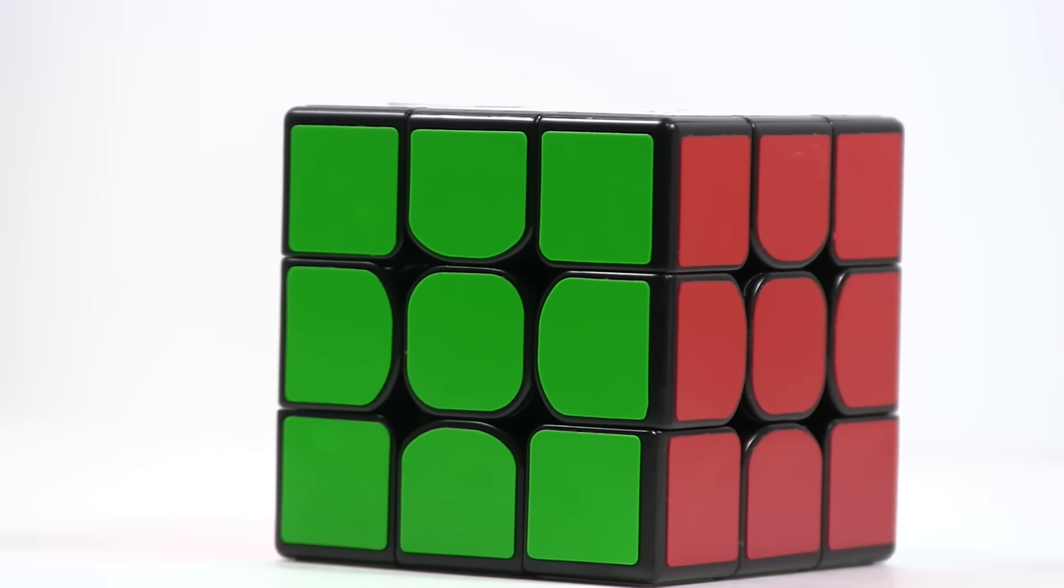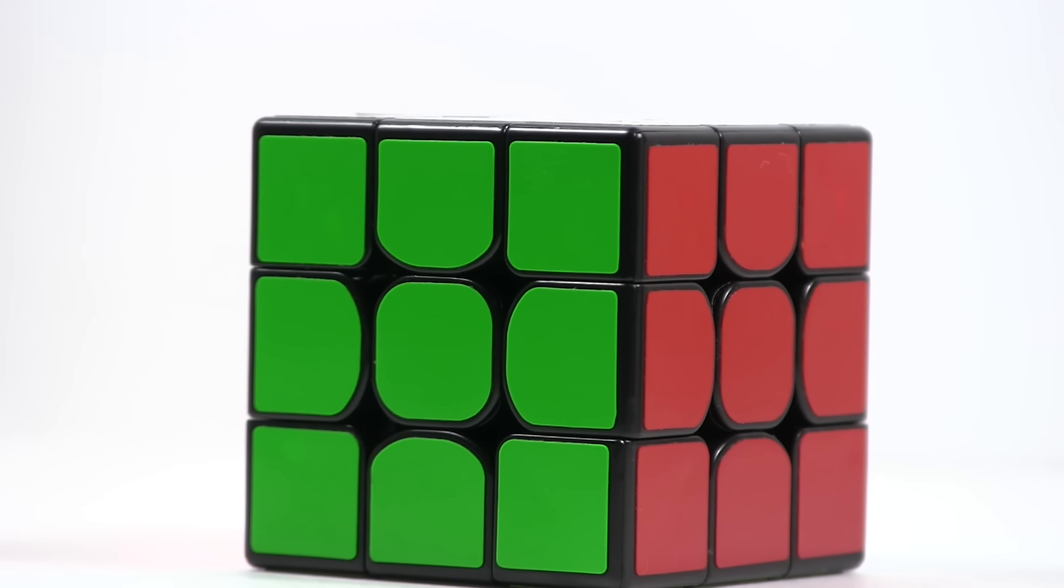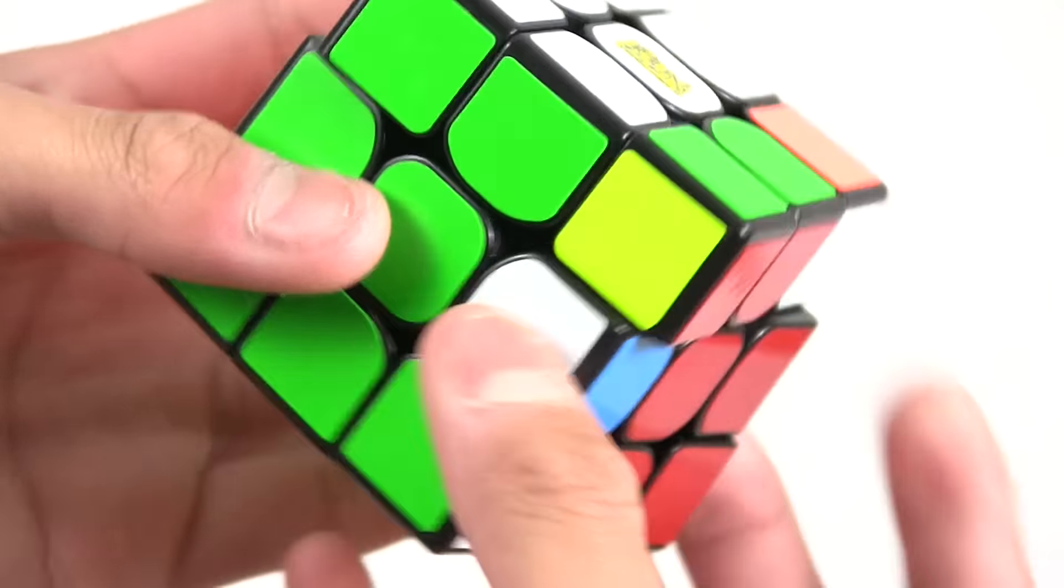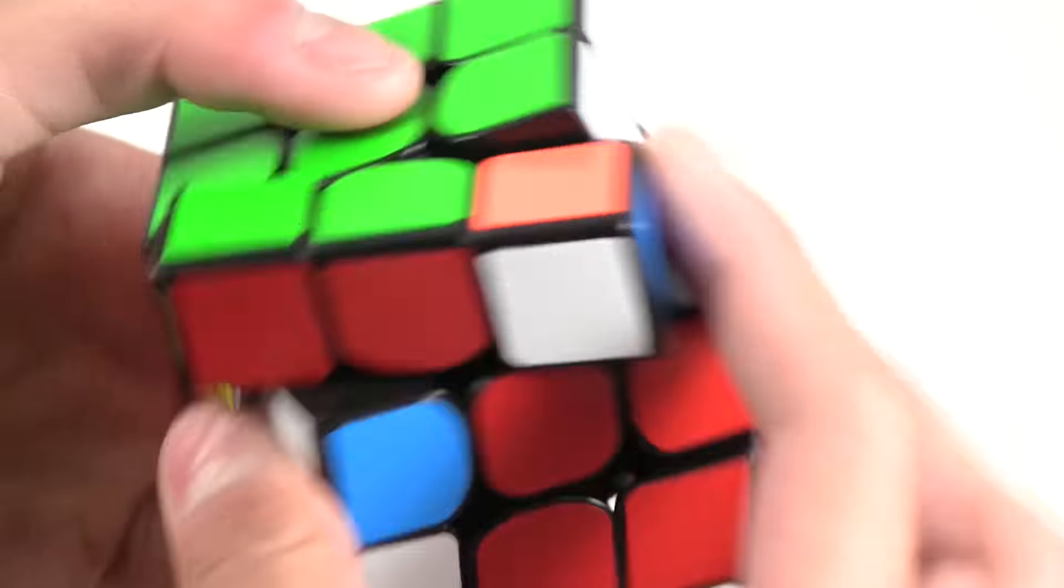One thing was that the corner cutting took way more force than other cubes. For example for the Valk when you corner cut it's pretty effortless. But for this one it does take a lot of force to corner cut and that sometimes could cause a couple lockups. And even though the weight 5 did make it a little bit more controllable it still was a bit uncontrollable for me.